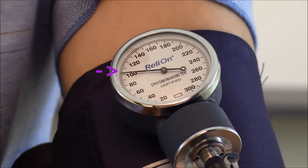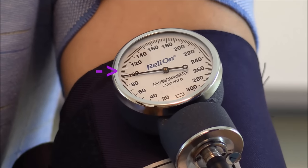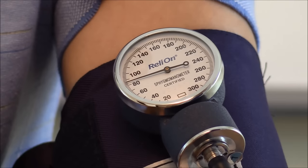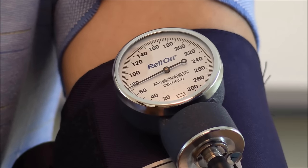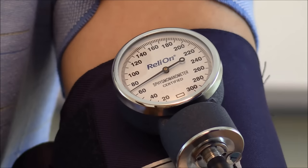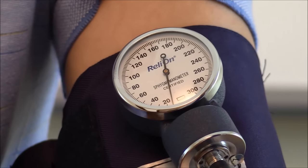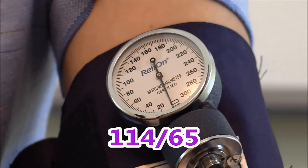Okay I heard it at about the 114 mark. Now we're listening for whenever it stops and whenever it stops that's our diastolic. Okay it stopped right at 65 so his blood pressure is 114 over 65. So that is how you check vital signs.